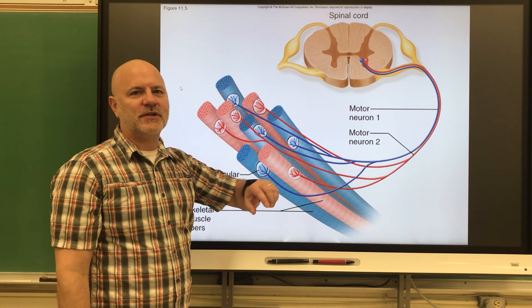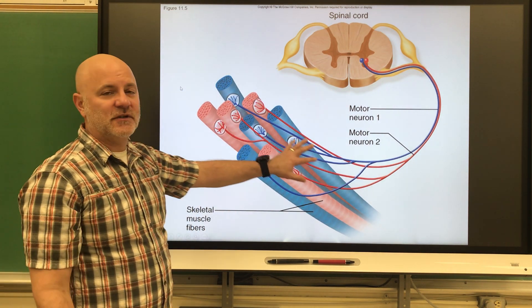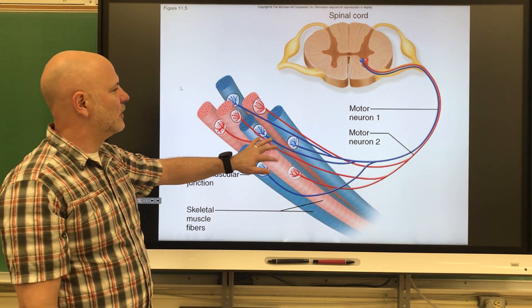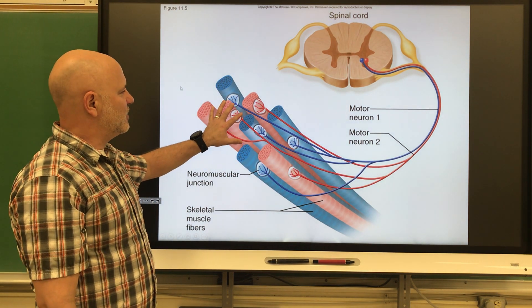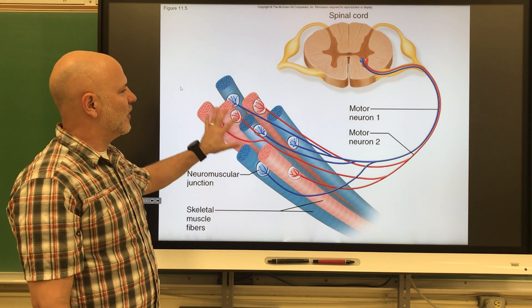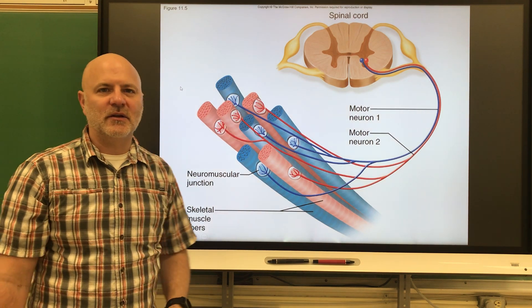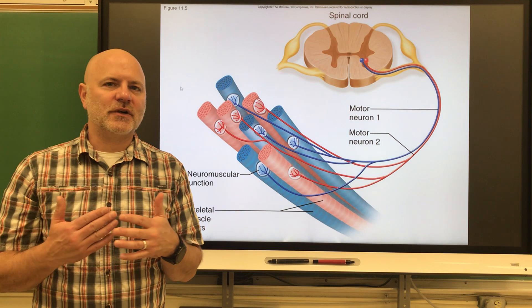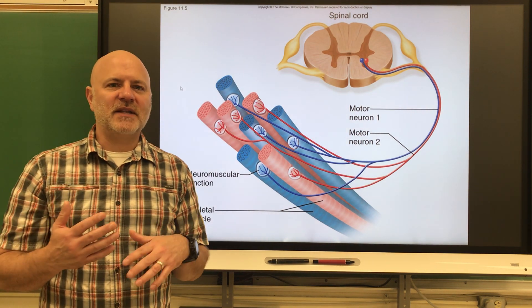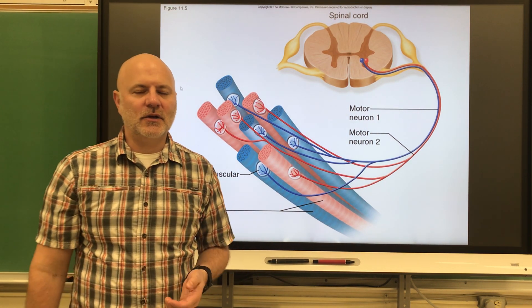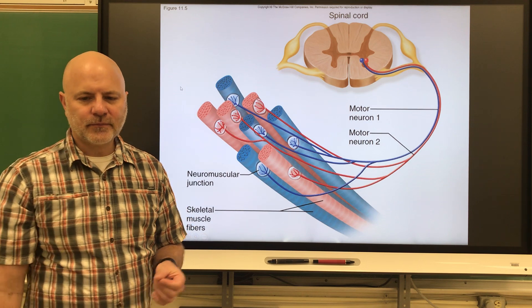Let's say the blue motor unit was contracting before it goes into fatigue. I shift to my red motor unit, and then before that gets into fatigue, I switch back to the blue unit and so on. By doing this partial contraction, that prevents muscles from tiring out, and so you can use them for long periods of time.